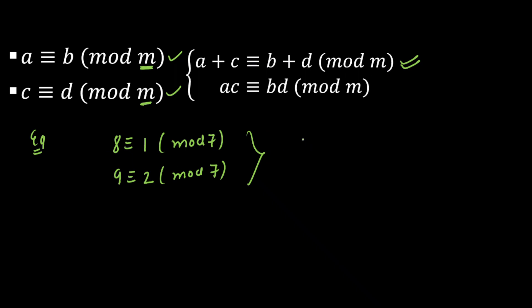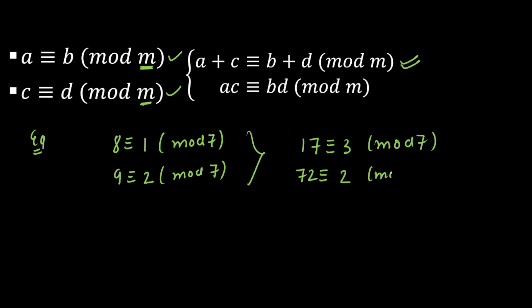Let's apply the addition property: 9 plus 8 is 17, which is congruent to 1 plus 2 equals 3, mod 7. The meaning is: if we divide 17 by 7, the remainder will be 3. And yes — 7 times 2 is 14, and 17 minus 14 gives remainder 3. For multiplication: 9 times 8 is 72, which is congruent to 1 times 2 equals 2, mod 7. The nearest multiple is 70, so the remainder is 2. Both are verified.